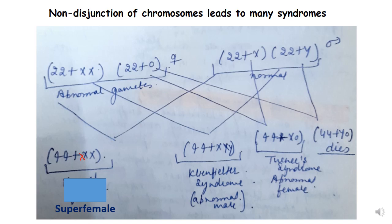The third progeny arises when the 22+O female gamete (without any X chromosome) fertilizes with the male's 22+X gamete, giving the condition 44+XO — Turner syndrome. This is an abnormal female condition with associated symptoms. The fourth progeny, 44+YO, results from 22+O and 22+Y fusing; this progeny does not survive and dies soon afterward.